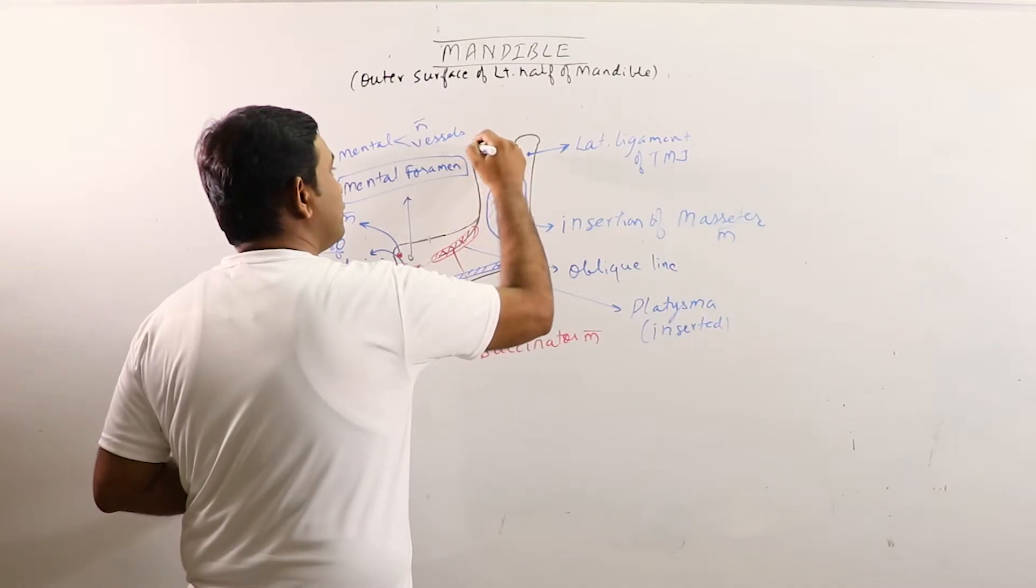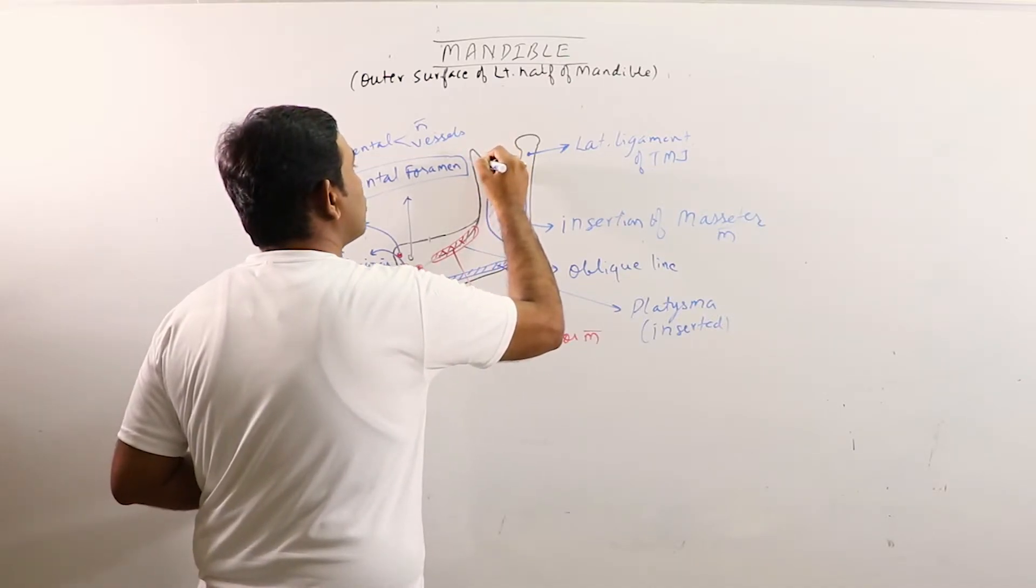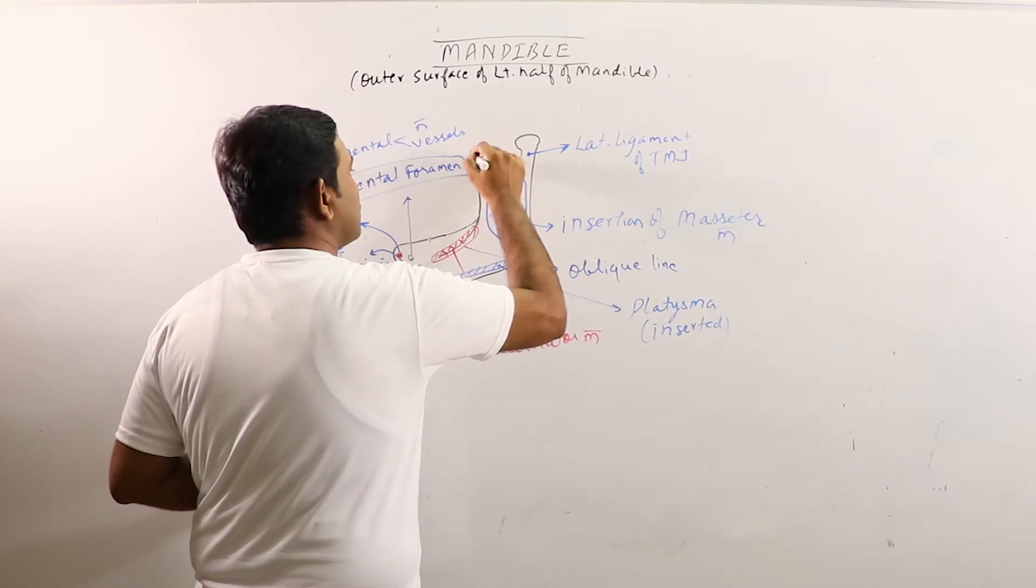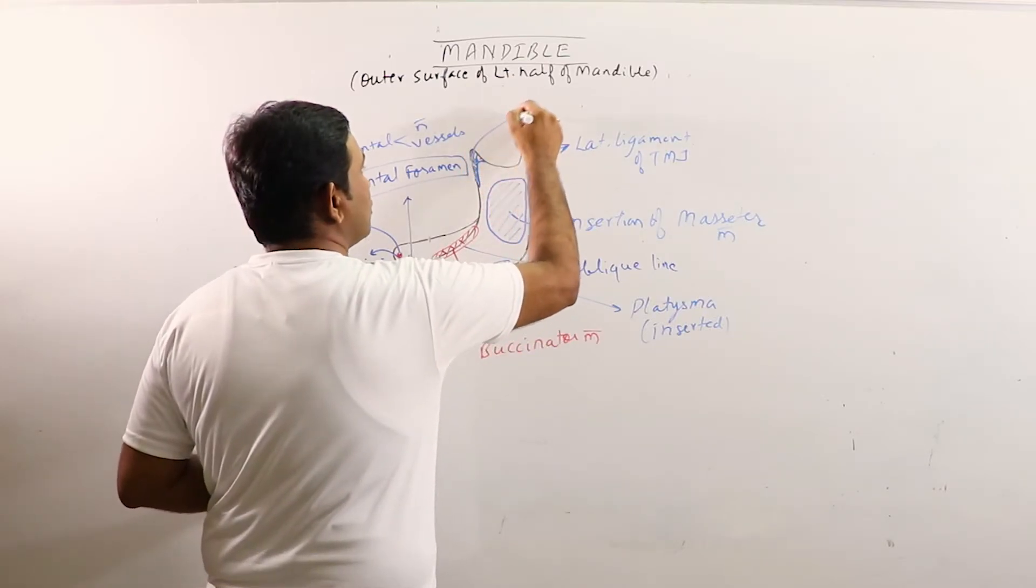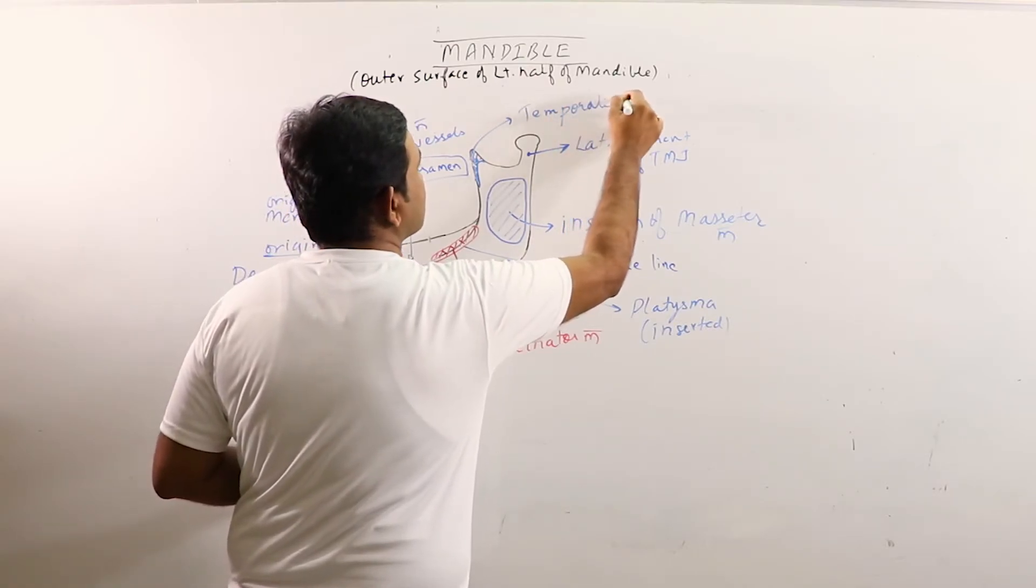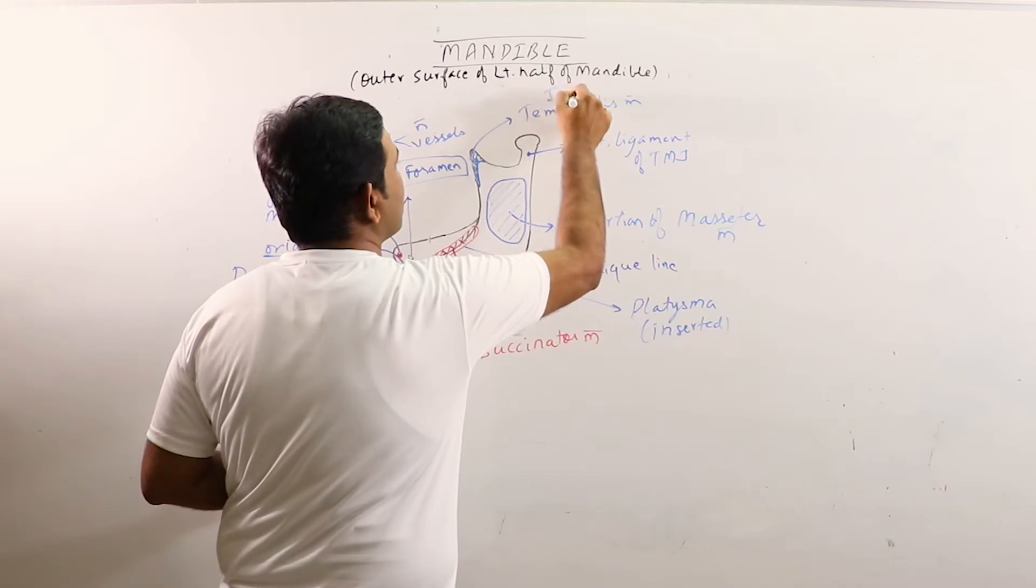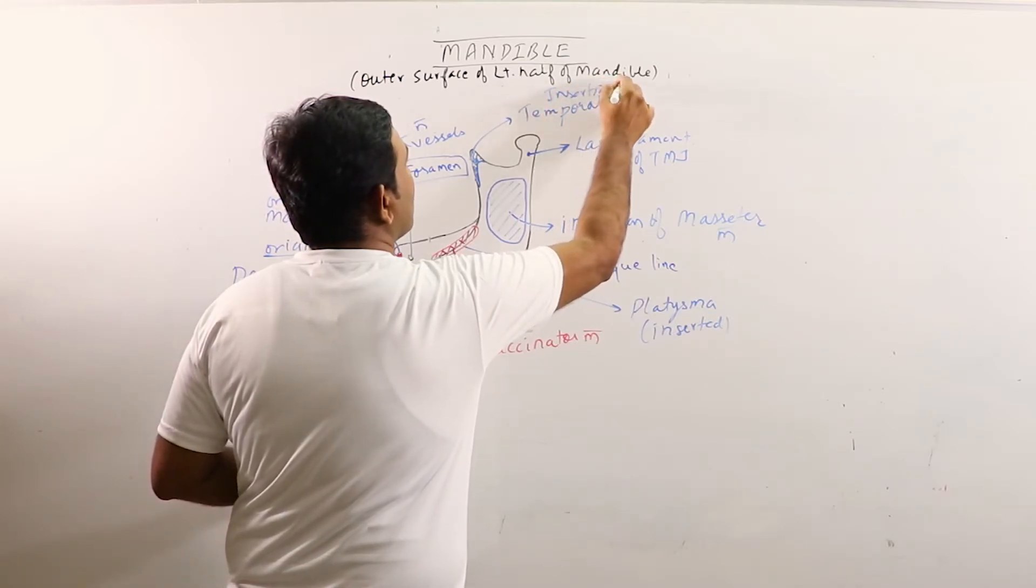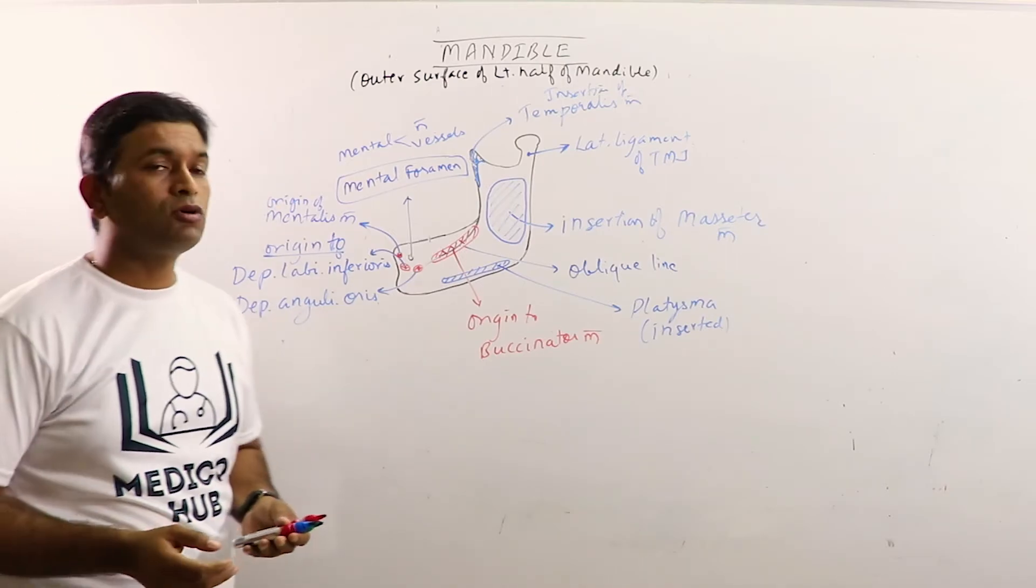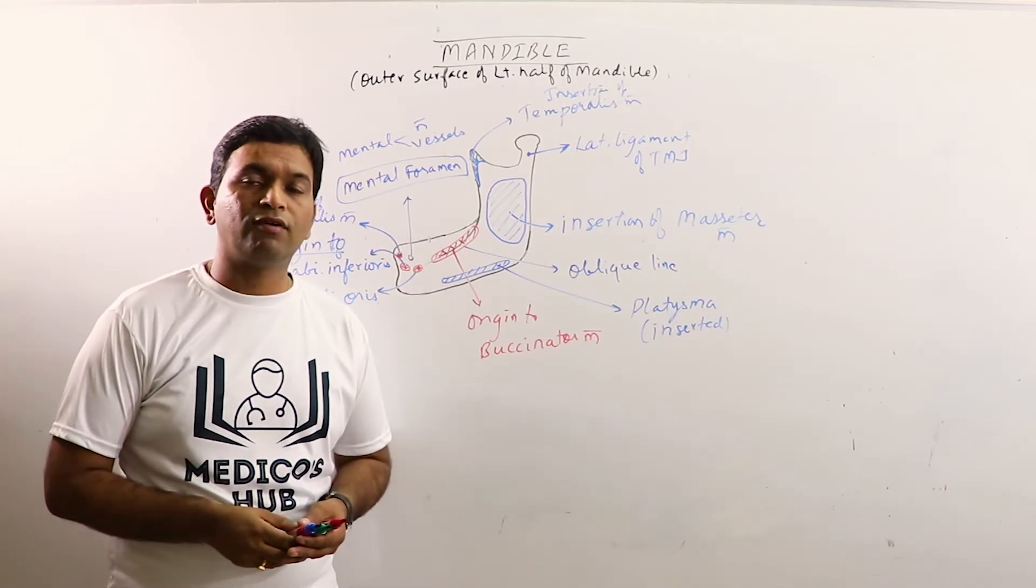And this is the coronoid process, the origin of temporalis muscle. So this is the outer surface of lateral half of mandible.